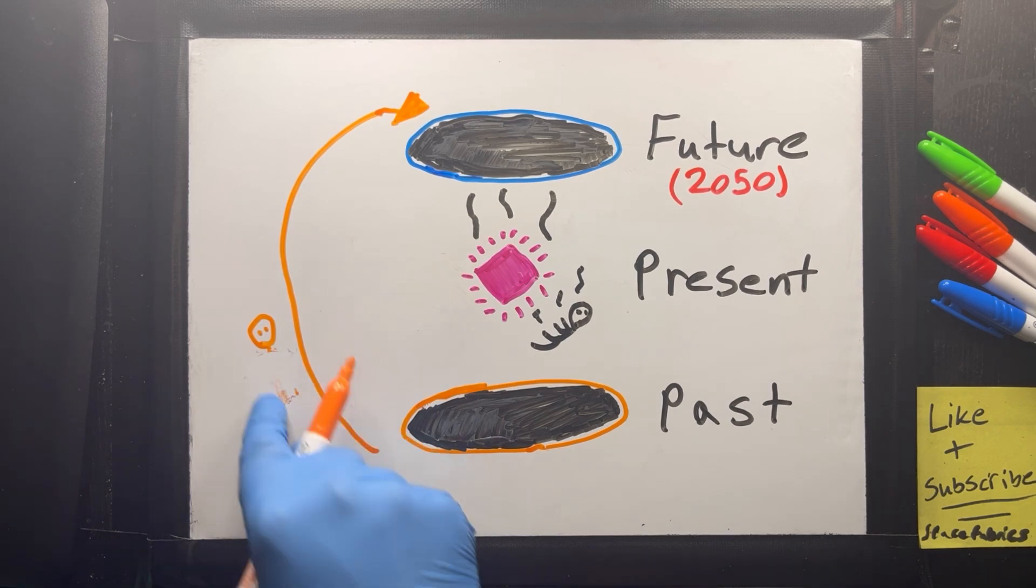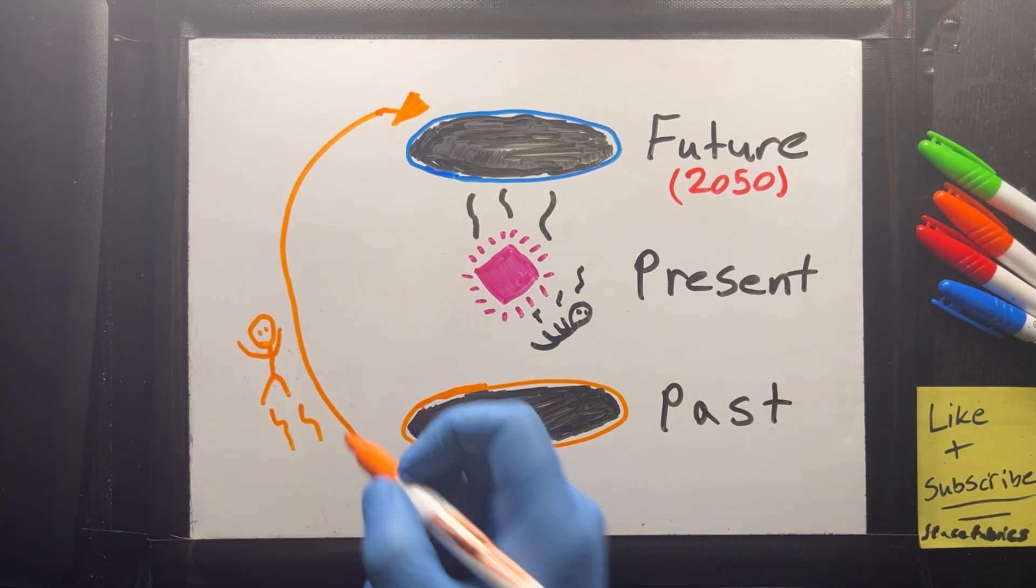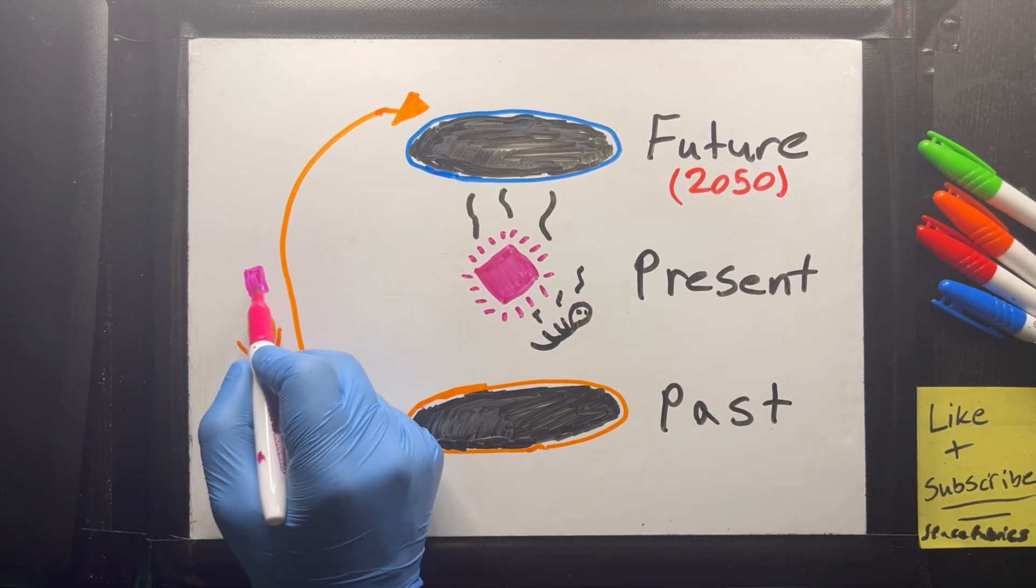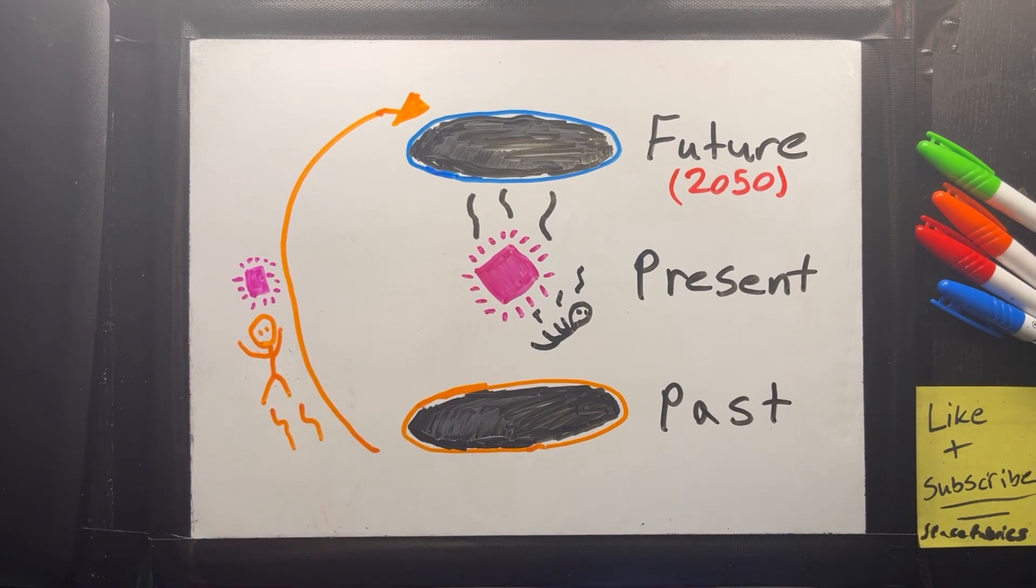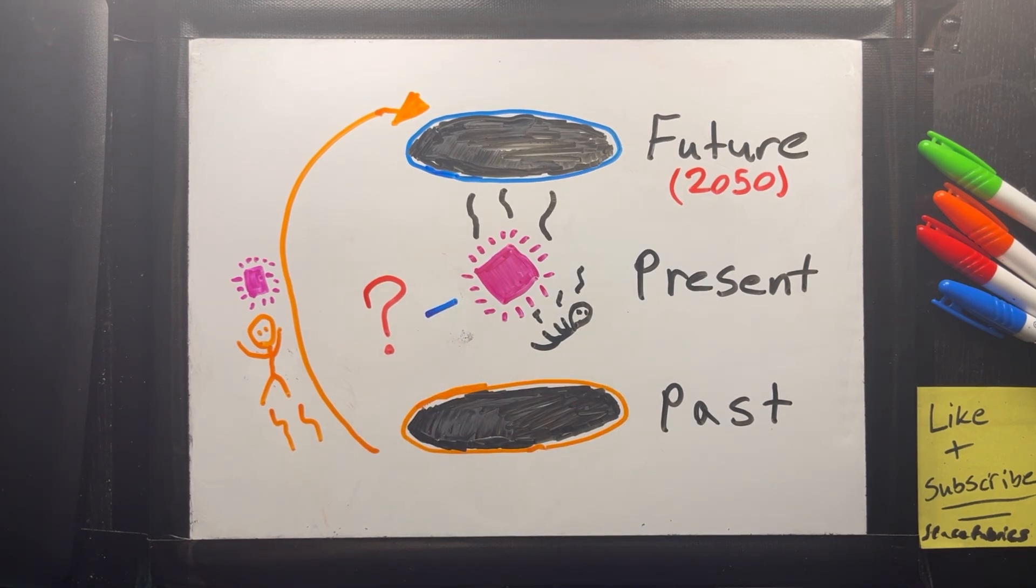And if the younger physicist now builds the time machine and repeats the cycle by traveling back to 2050 to return the blueprint, then where did the blueprint come from? If they exist only by being passed through time, their origin would be kind of unknown. Or will this break physics?